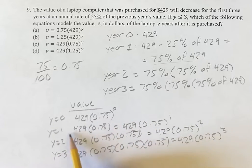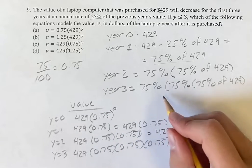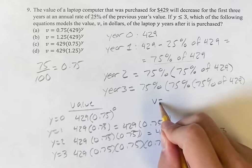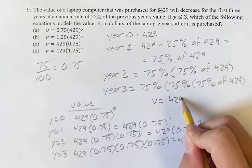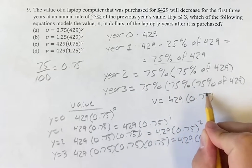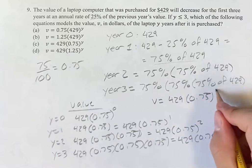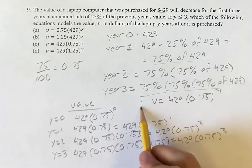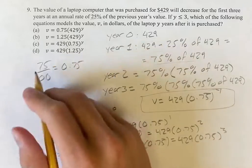You'll notice that these exponents are lining up with your value of y, which means when we're looking at your y, then v is going to be 429 times 0.75 to whatever y is. And this is actually going to be our final formula, which you'll notice lines up with answer C.